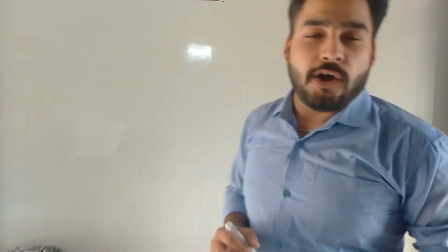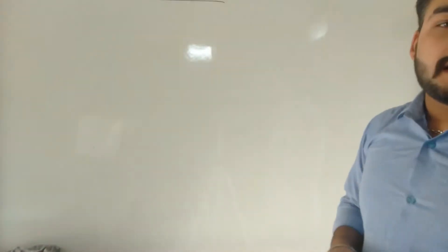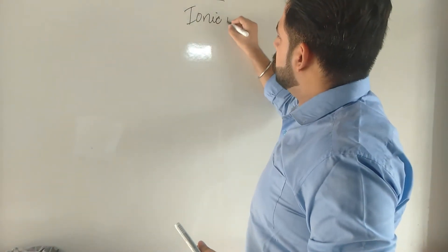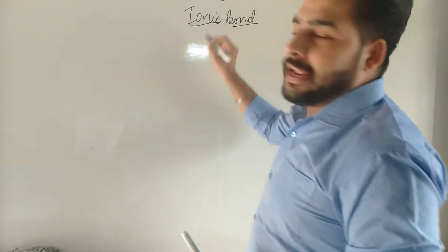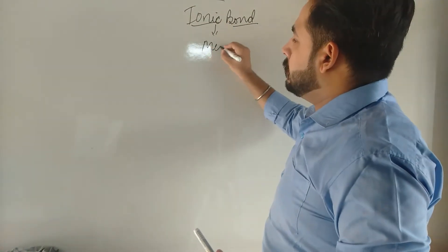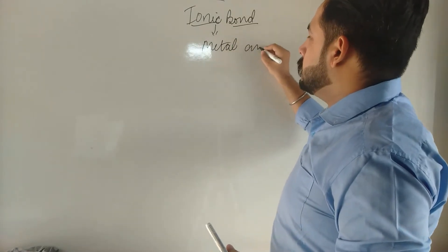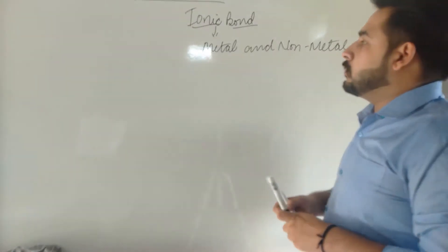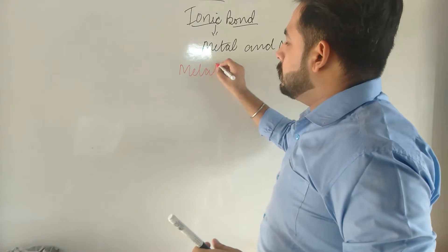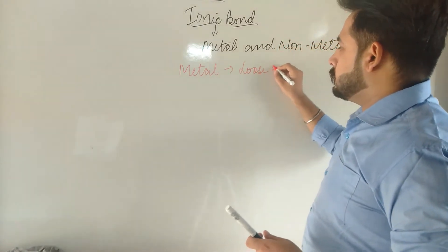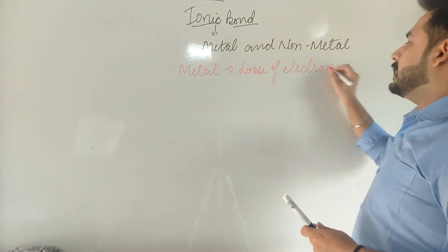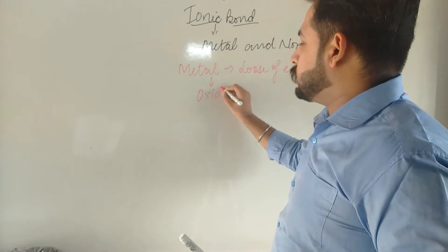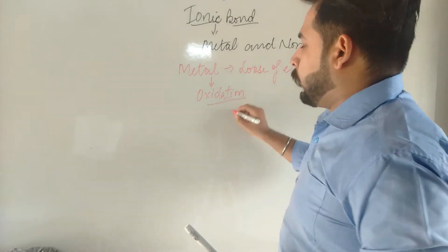Hello everyone, I hope you all are fine. Last time we discussed about the ionic bond. Ionic bond is found between the metal and non-metal. For the metal, we know that in the ionic bond, metal loses electrons because metals are electropositive in nature. So we can also say that oxidation will take place on metals.